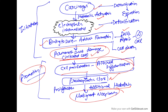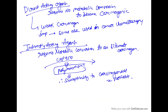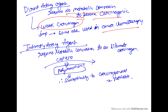So we require initiation, which causes permanent DNA damage and mutation, and then we require promotion so that it converts into a malignant neoplasm. Directly acting agents require no metabolic conversion to become carcinogens, and they are actually weak carcinogens. However, they are important because some of them are used in cancer chemotherapy as well.